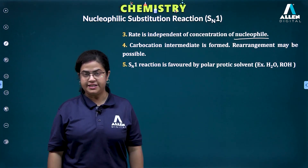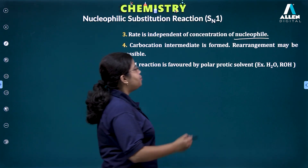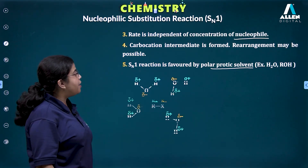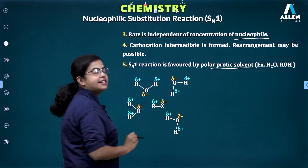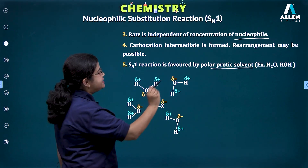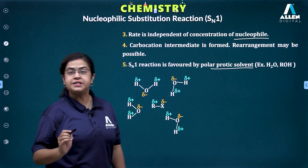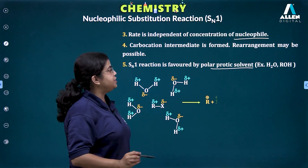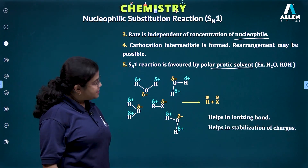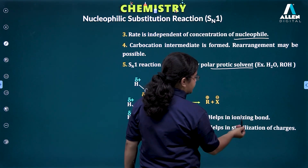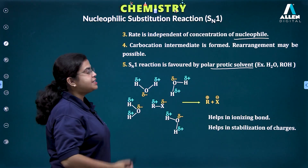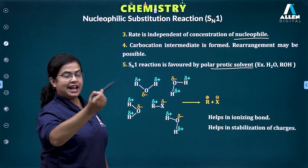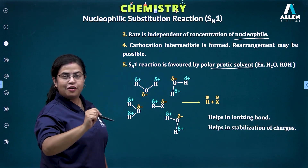What kind of solvents favor SN1? Polar protic solvents, which can form hydrogen bonds easily, where the δ⁺ and δ⁻ are sufficient to bring about heterolytic cleavage of the R–X bond conveniently. Polar protic solvents also stabilize the carbocation intermediate formed. Examples include water, alcohol, and ammonia. They help in ionizing the bond and stabilizing the charges. Greater the stability of the carbocation, greater the tendency for the forward reaction and formation of the desired product by the SN1 pathway.